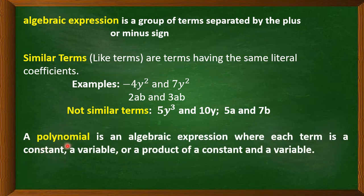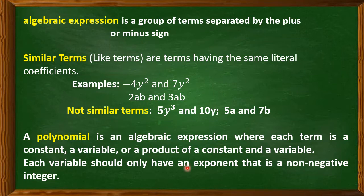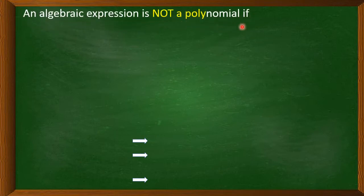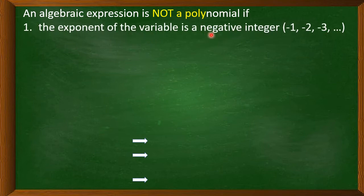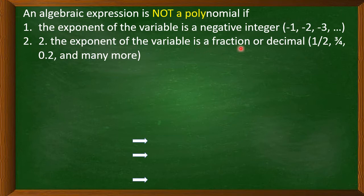Now, about polynomials. A polynomial is an algebraic expression where each term is a constant, a variable, or a product of a constant and a variable. Each variable should only have an exponent that is a non-negative integer — meaning positive integers only. An algebraic expression is not a polynomial if the exponent of the variable is a negative integer, or if the exponent is a fraction or a decimal.